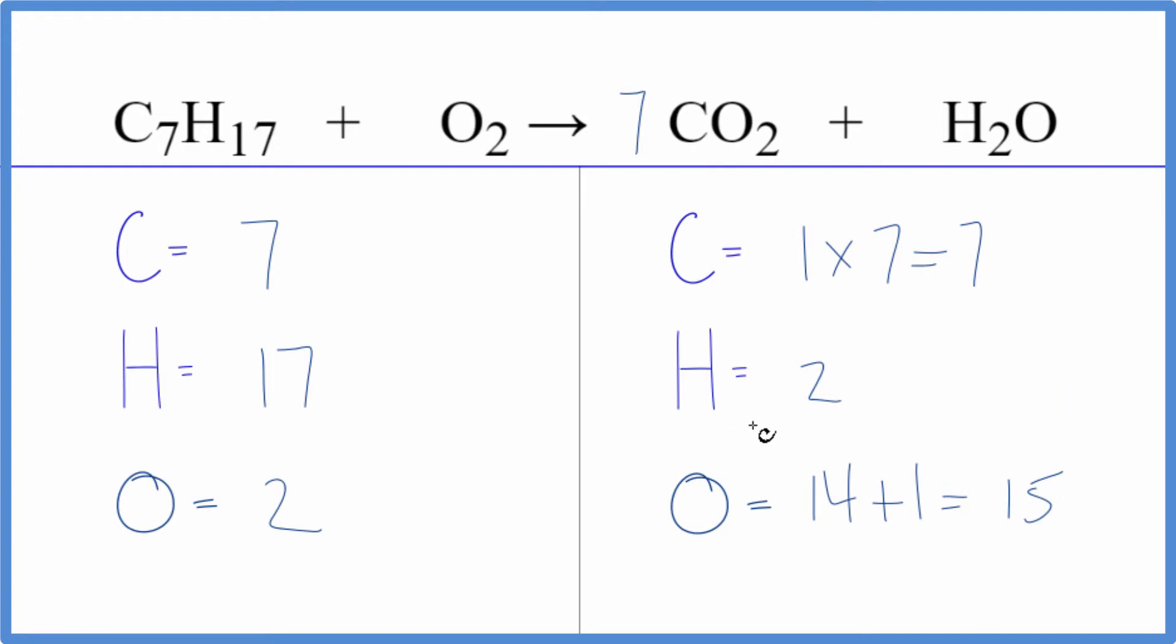At this point, I'd really like to get the hydrogens balanced. And to do that, I think what I want to do is get this to an even number. That way, then I can balance the hydrogen here much easier. So I'm going to take this and double it times two. That'll give me 34. I'm going to put a two up here as the coefficient.